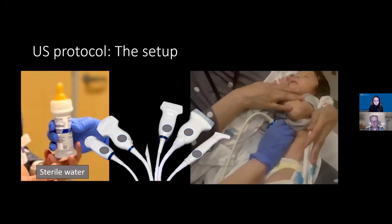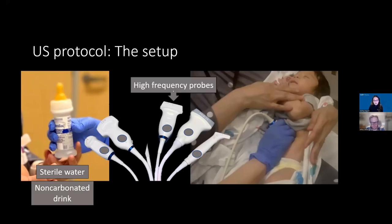If you do try enteric contrast, for babies we try to give sterile water, and for older kids they can drink some kind of juice. We haven't established a protocol for that. As I stressed in the beginning, I always start with a high-frequency probe and then move down the list depending on how big the patient is and what else I need to see.